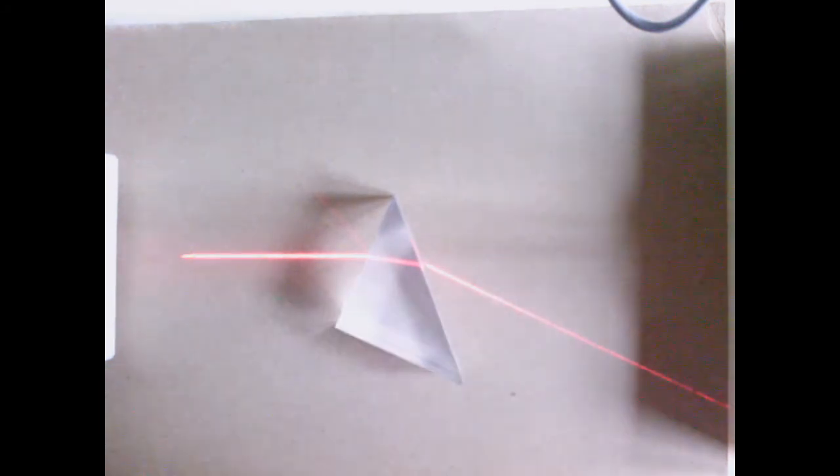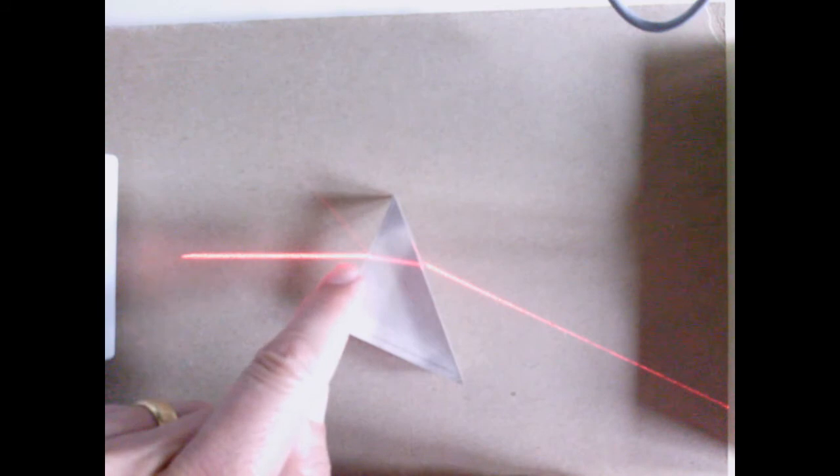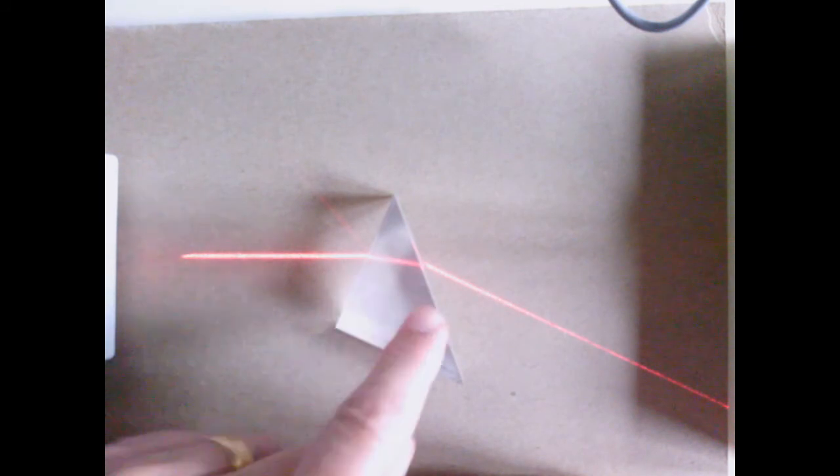Here's a prism, and you can see that light bends in this prism twice, once at this interface, this boundary, and once at this boundary.